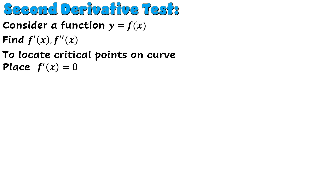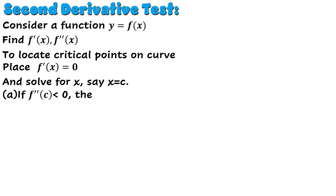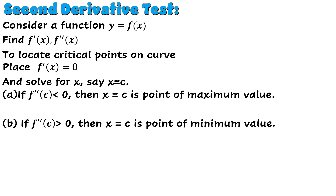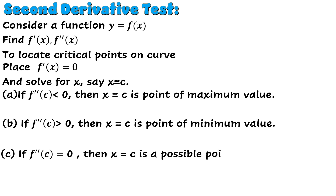We solve for x, say x = c. We then substitute this value into the second derivative. If f''(c) < 0, then x = c is a point of maximum value. If f''(c) > 0, then x = c is a point of minimum value. If f''(c) = 0, then x = c is a possible point of inflection. This is the statement of the second derivative test.